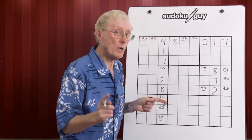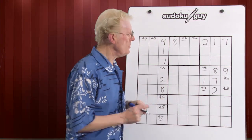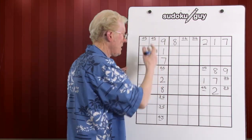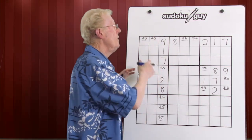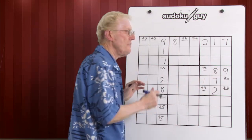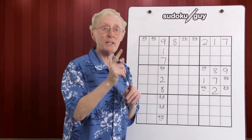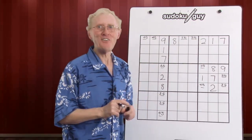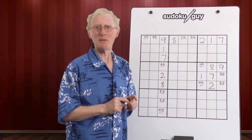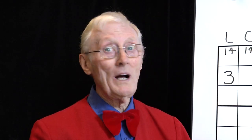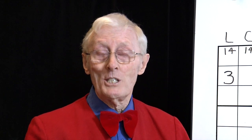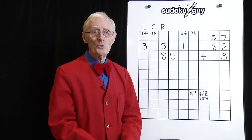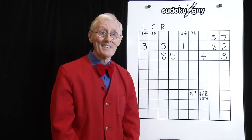From now on, when you're looking at a row, a column, or a block, if you notice there's one or two cells missing, you now know how to fill them in. Here's another segment to show you more things you can do with matching pairs.